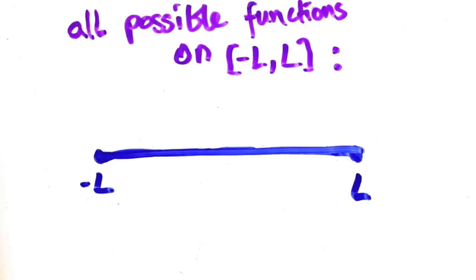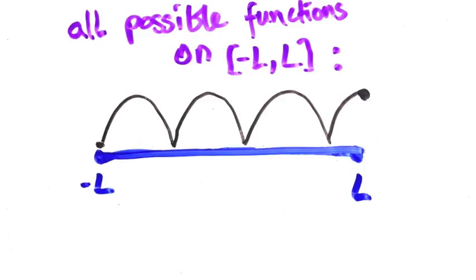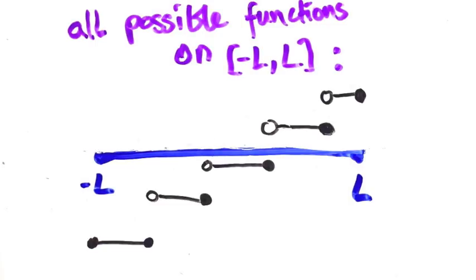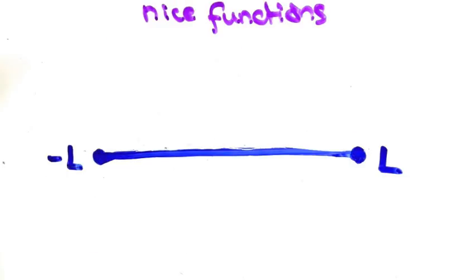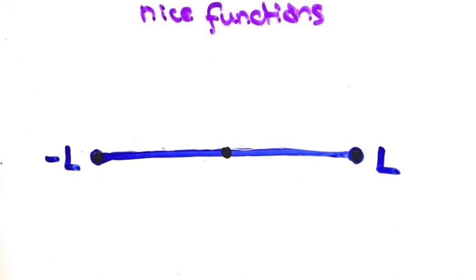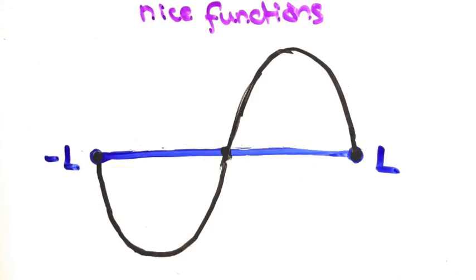Okay, let's start by considering all the functions that you can draw on a line between negative L and L. So what do our nice functions look like? I can make them like this. First draw a dot at zero and then dots at the endpoints. Now connect them like this.